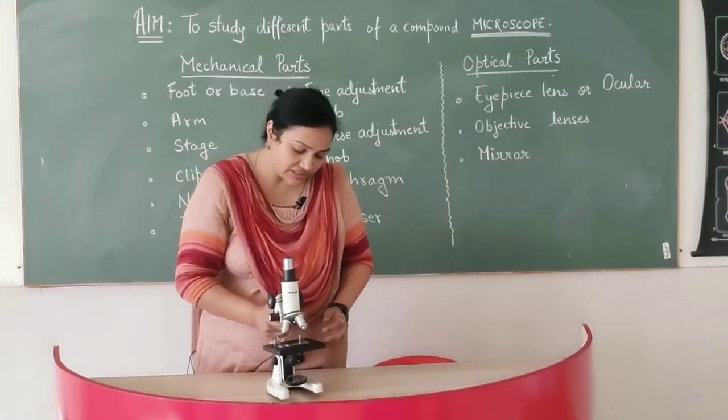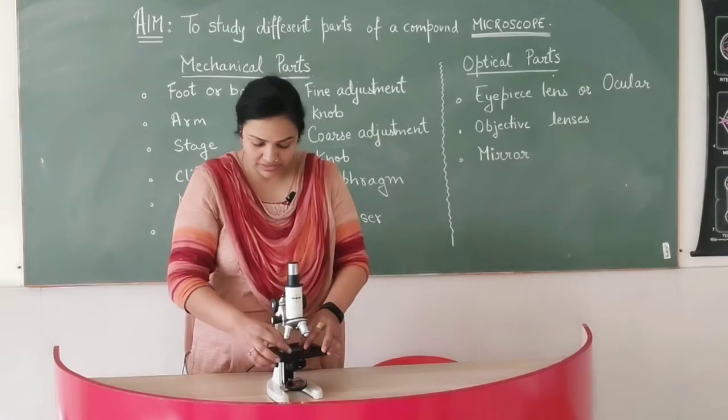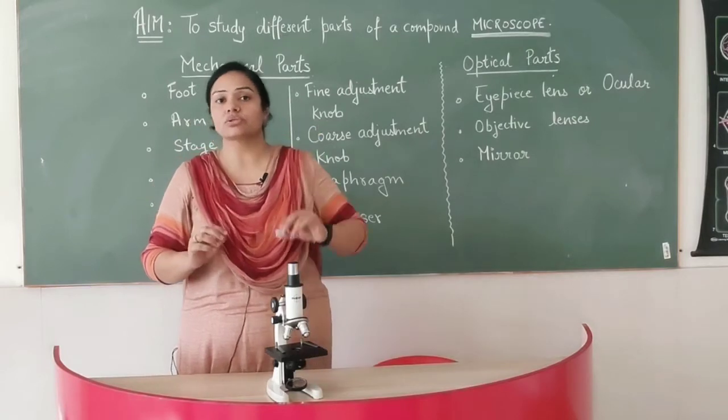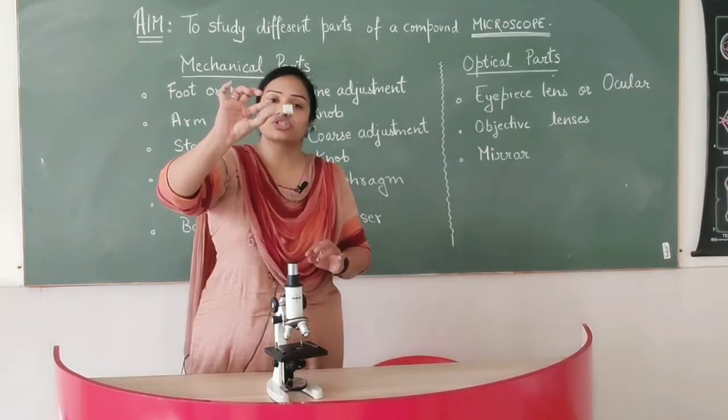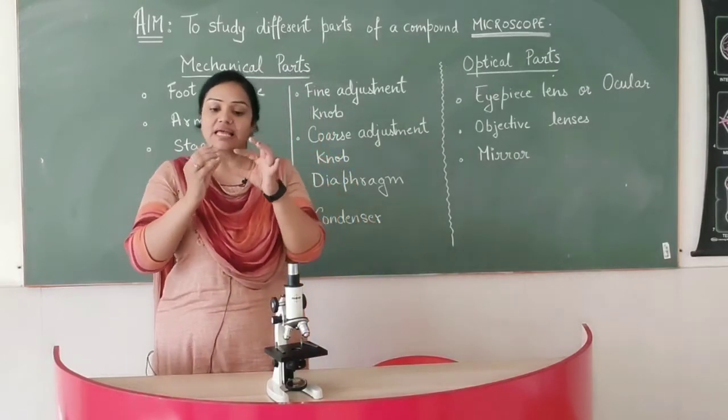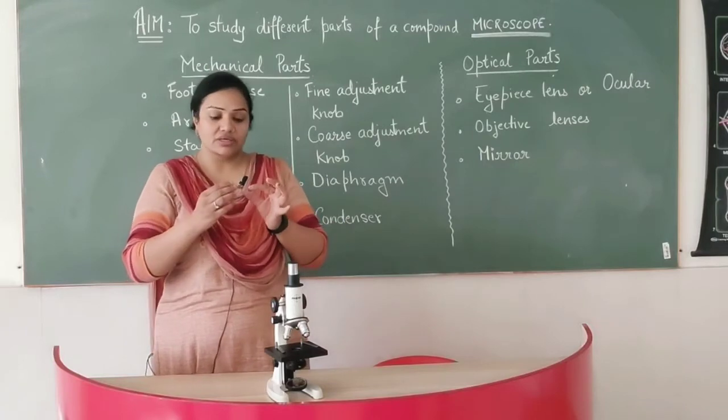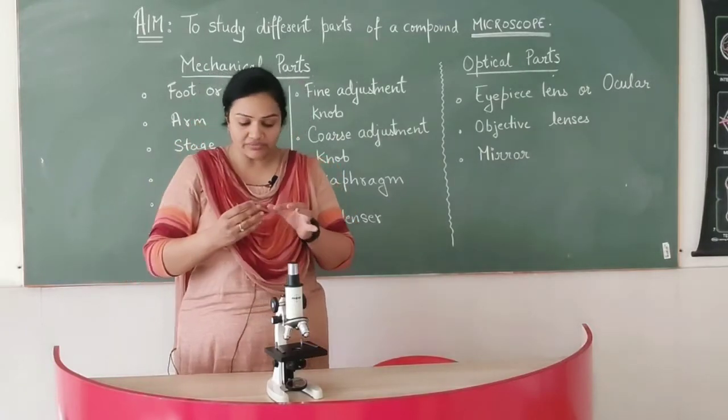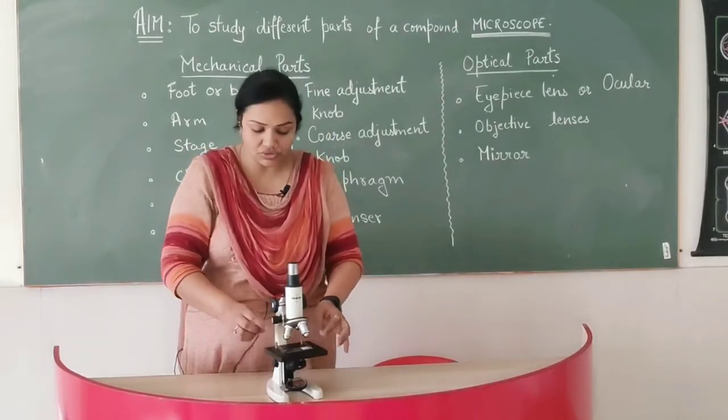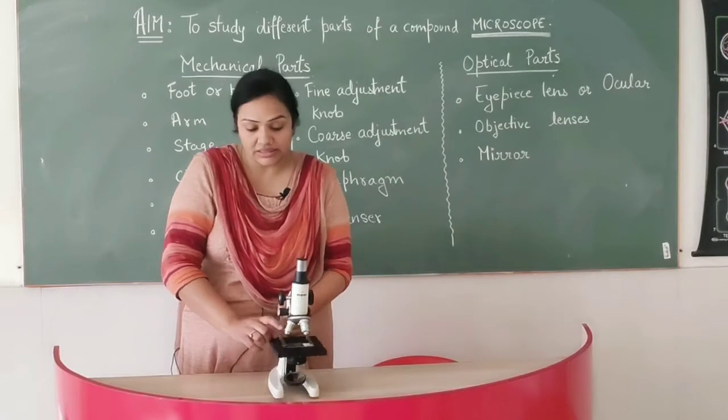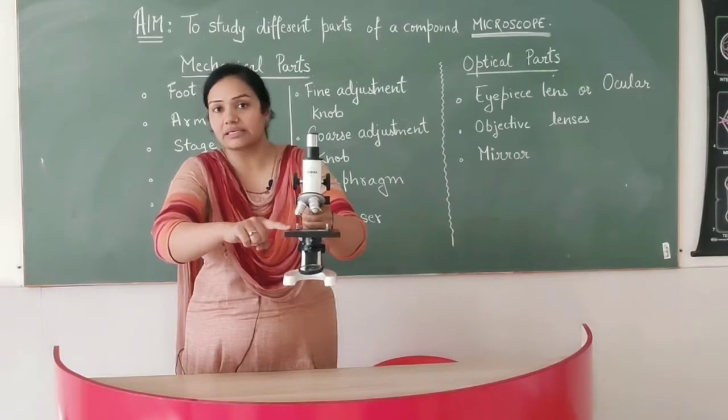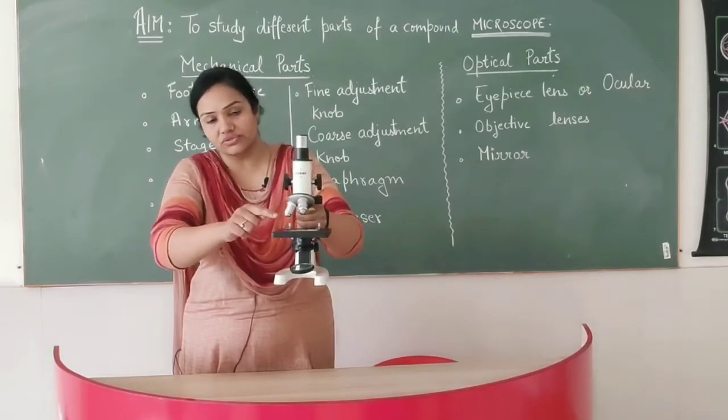Now when we need to see the object on the microscope, we are going to make certain kind of slides. We have temporary slides also and permanent slides also. This which I am showing you is a permanent slide. So we can see the cell or the tissue on these slides. Now when we keep this slide on the stage, there are two clips on this microscope. These two clips actually help to hold the slide so that it does not move here and there.